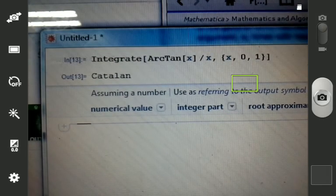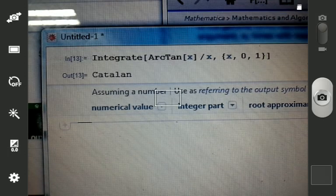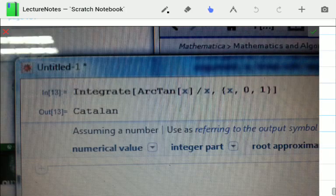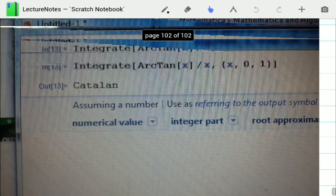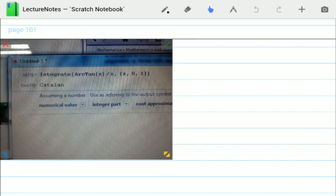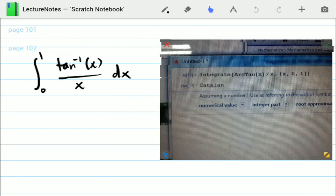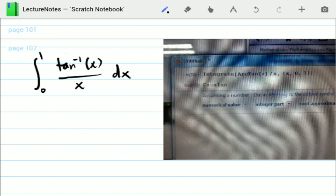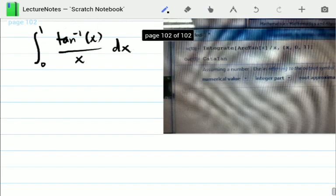So when you try to do arctan of x over x in Mathematica, which I did, surprisingly it will give you the following. Let me take a screenshot. It actually says that when you integrate arctan of x over x from 0 to 1, it says Catalan. That's fine if you're familiar with what Catalan is, but if you're not, you're like what's that Catalan? That's why I'm doing this video to give you an introduction to this underground constant known as Catalan.